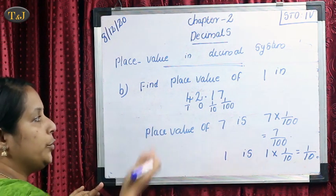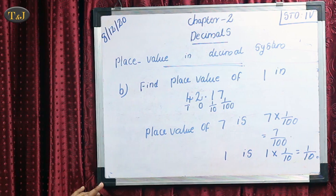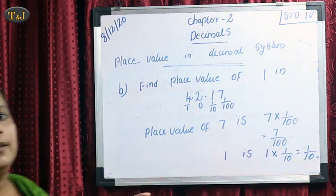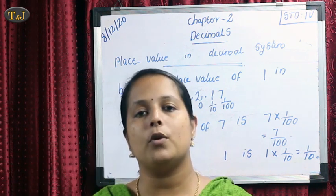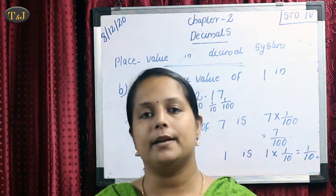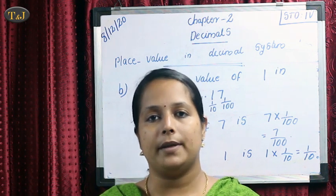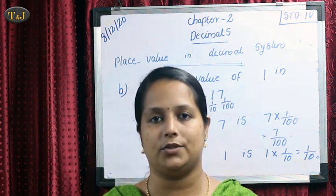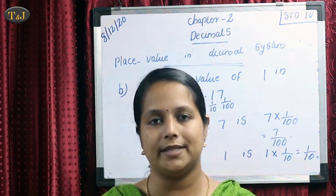The place value of 2 is in the 1's place, so the place value is 2. The place value of 4 is in the 10's place, so 4 × 10 = 40. I hope all of you understood how to read the decimal number and how to find out the place value of numbers in the decimal system. Thank you, students.